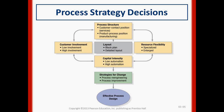Capital intensity refers to how much automation you use. In a Subway, there is no automation — versus a Hyundai plant, which has a high level of automation. That determines what strategies you use to make changes, and it leads to your effective process design.